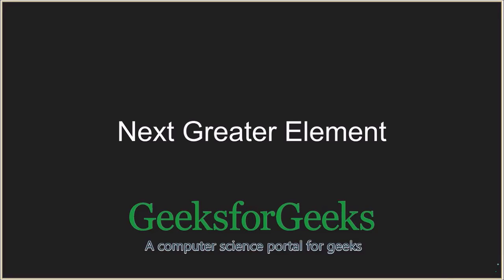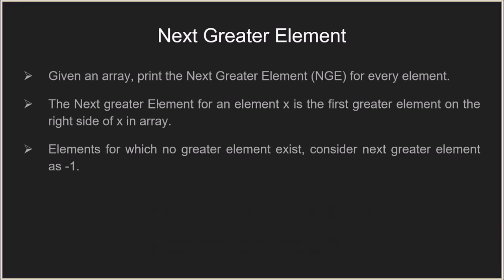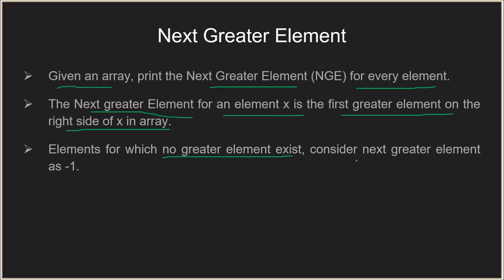Hello everyone and welcome to GeeksforGeeks. In this video we are going to see the problem to find the next greater element. In this problem you will be given an array and you have to print the next greater element for every element in the array. The next greater element for a given element X is the first greater element on the right side of X in the array. Elements for which no greater element exists, consider the next greater element as minus 1.